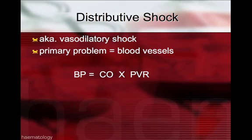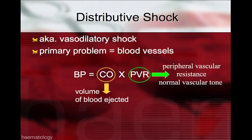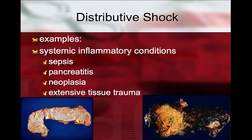Distributive shock, or vasodilatory shock, is a problem primarily within the blood vessels. The problem is best shown through the equation where blood pressure equals cardiac output — the volume of blood ejected from the heart — multiplied by peripheral vascular resistance, which determines normal vascular tone. If peripheral vascular resistance goes to zero, blood pressure will also be negligible. Examples of distributive shock include systemic inflammatory conditions such as sepsis, severe pancreatitis, neoplasia, and extensive tissue trauma.